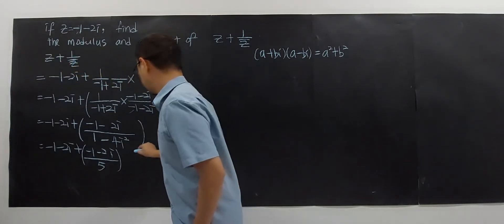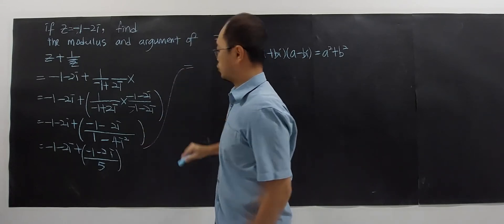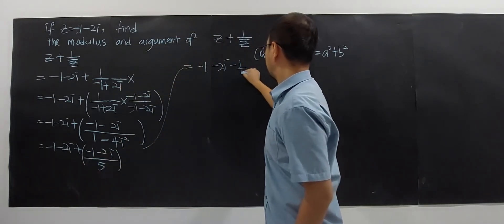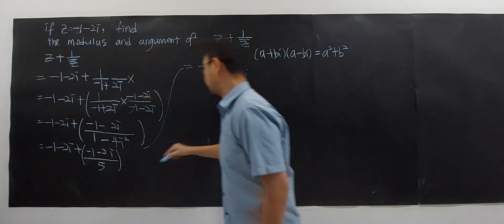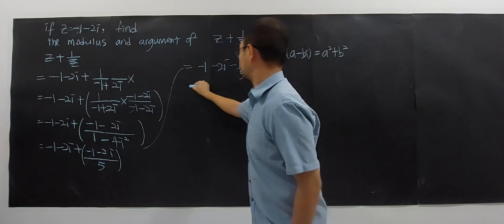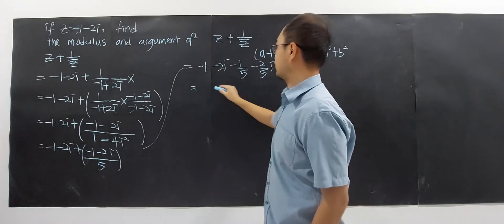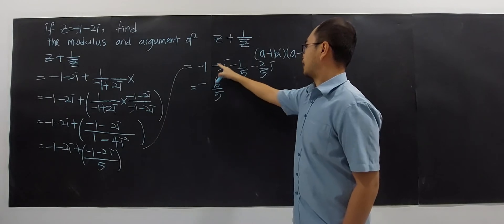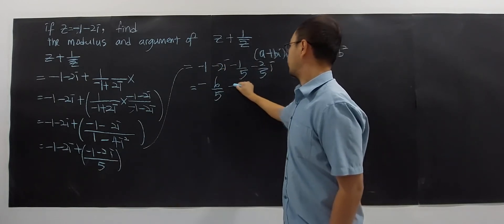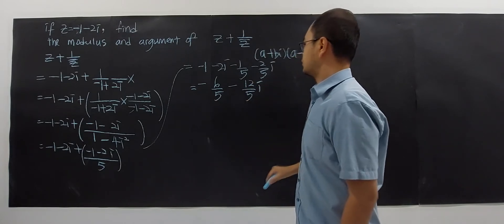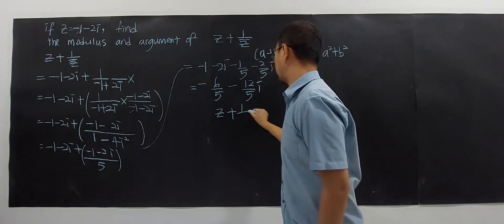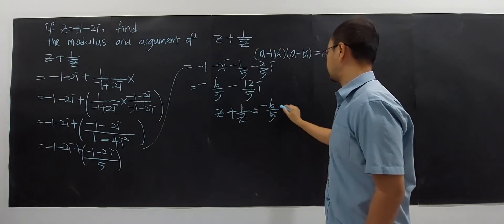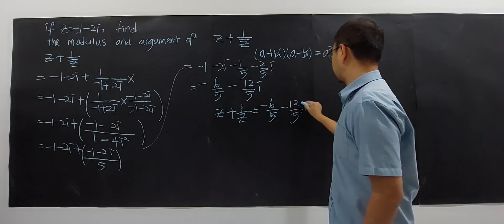After simplifying, we get negative 1 minus 2i over 5, giving negative 1 over 5 minus 2 over 5 i. Combining with the original negative 1 minus 2i: the real part becomes negative 1 minus negative 1 over 5, giving negative 6 over 5. The imaginary part gives negative 12 over 5 i. So Z plus 1 over bar Z equals negative 6 over 5 minus 12 over 5 i.